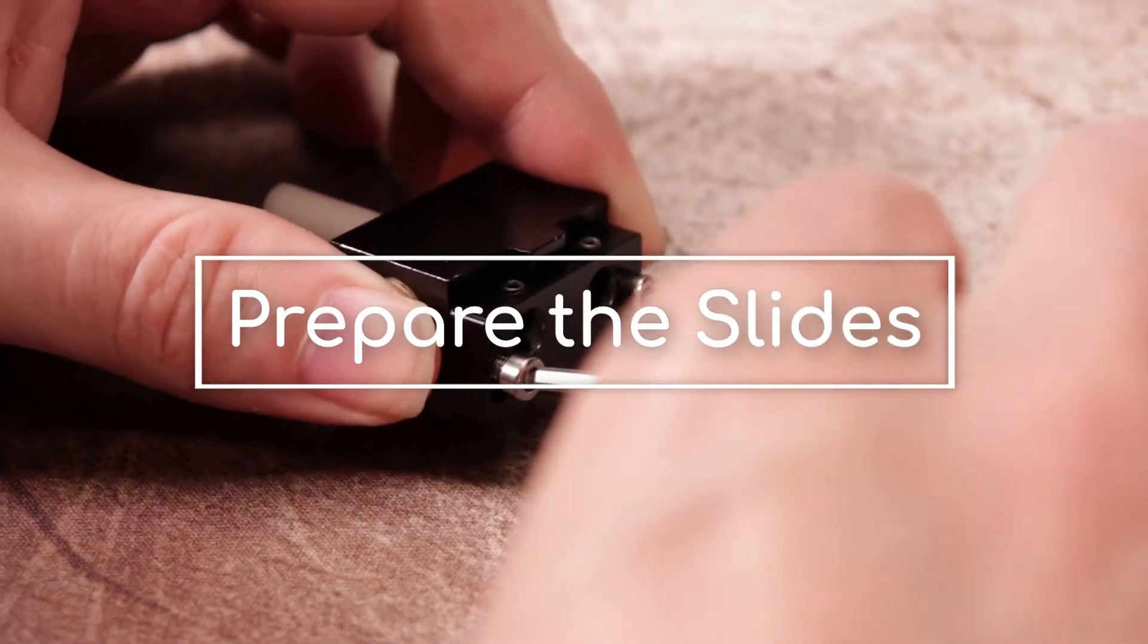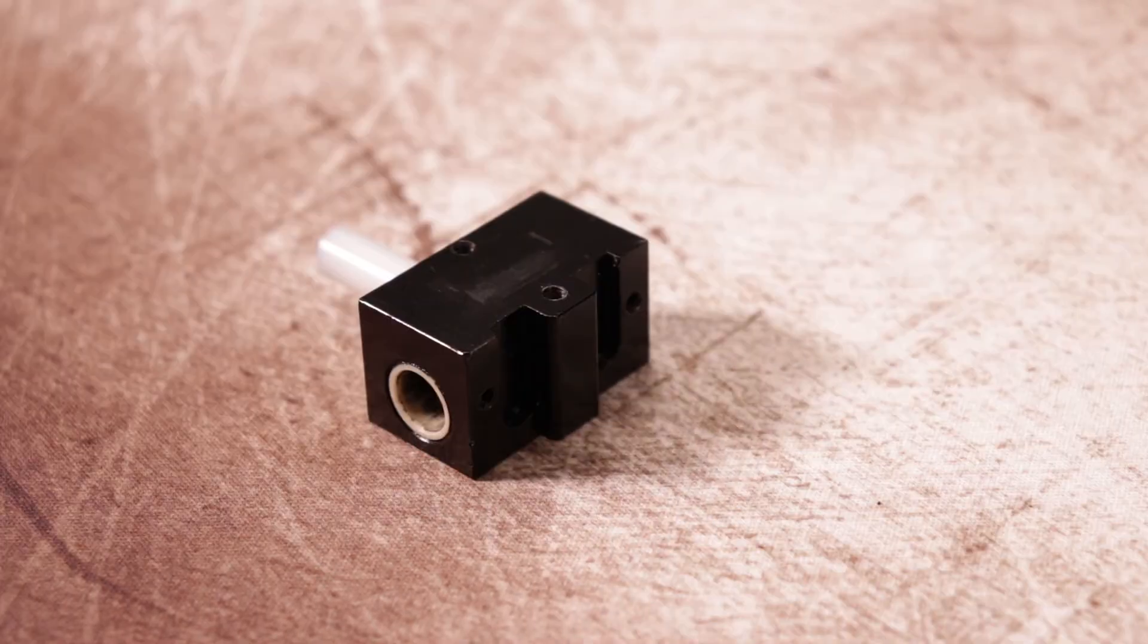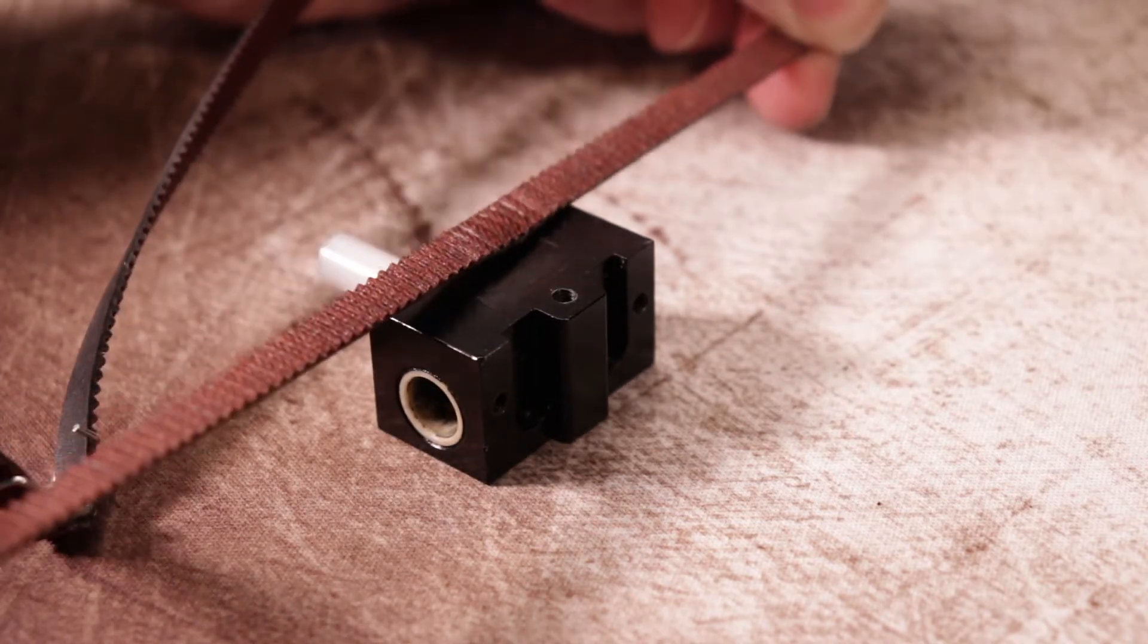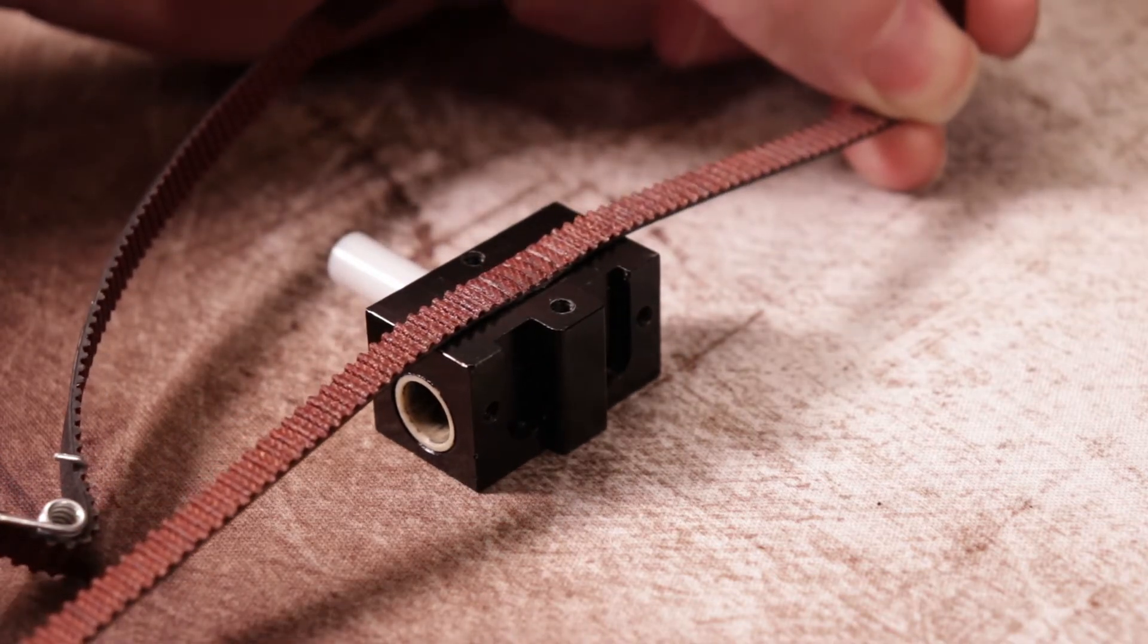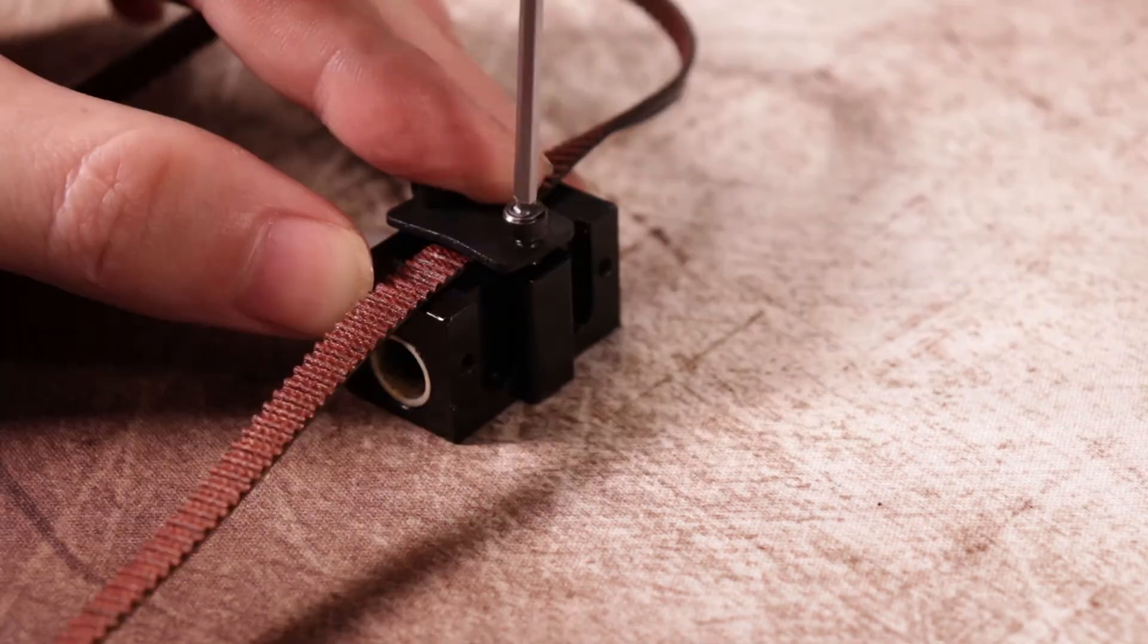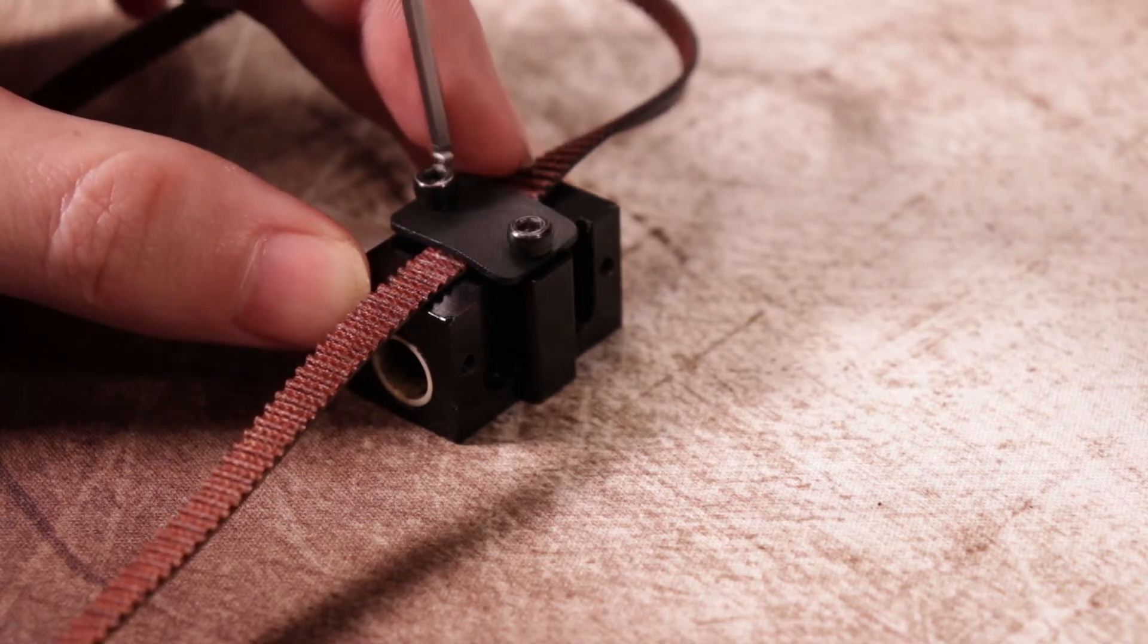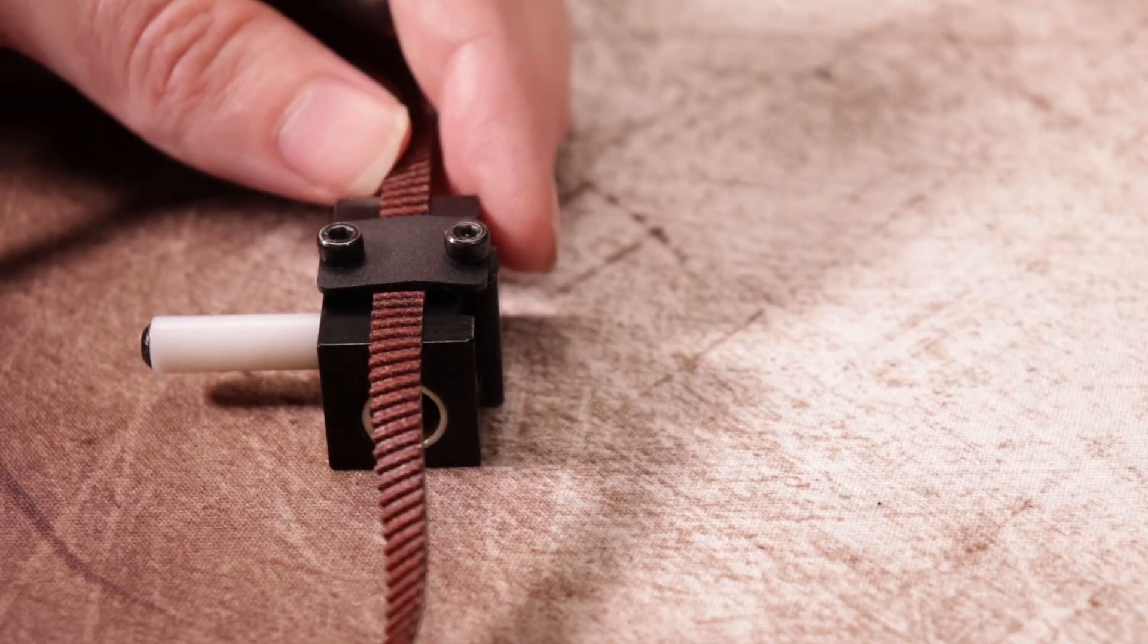Alright, let's get to it. Disassemble the slides again by removing the screws and separating the two halves. Now reinstall the belts on each slide. All the belts are the same length so it doesn't matter which one goes where. You should see a flat spot on each belt where it was previously mounted. Just place it back in that position and make sure the teeth are facing upward. Then reinstall the retainer with the two original screws. Do your best to align the belt with the 8mm round hole, but perfection isn't needed here because it can be adjusted later.